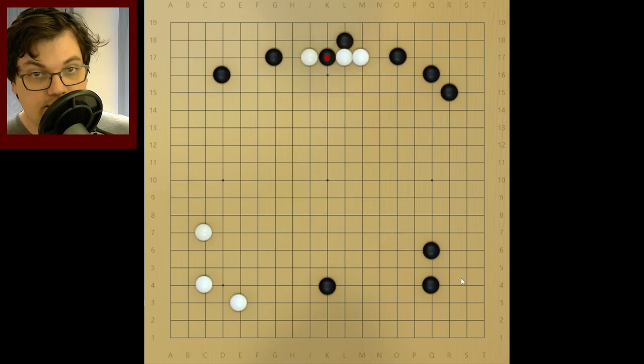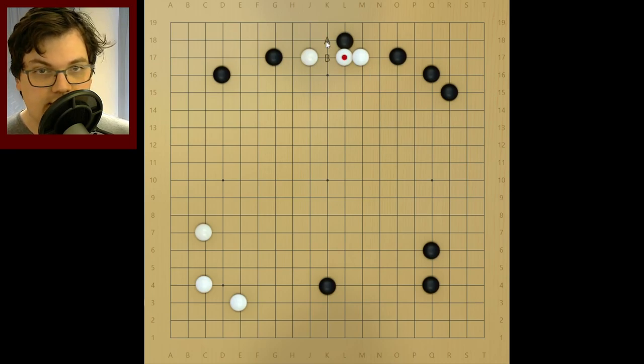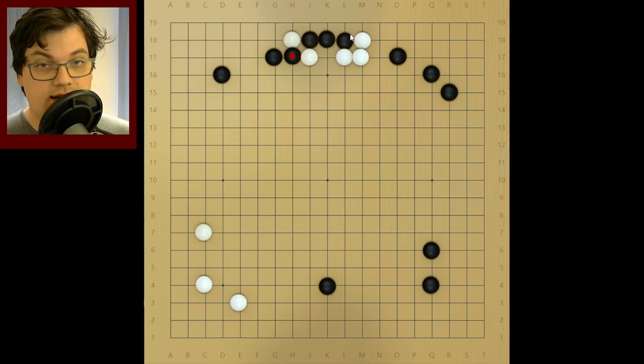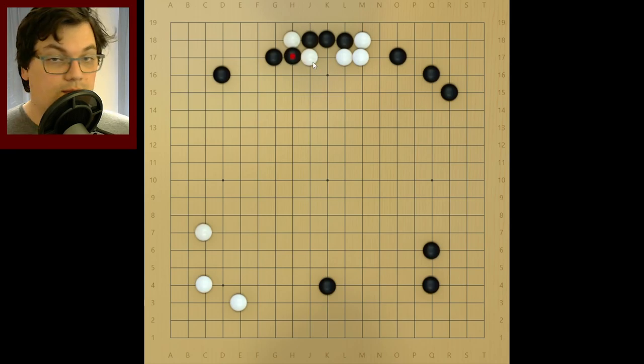But the killing variation, which I'm sure most people are more interested in, is A here. If White tries to block on this side, Black just extends and is connected. This is the same thing as earlier, because this White stone is dead, Black even has more liberties in this. And White has a weakness here.